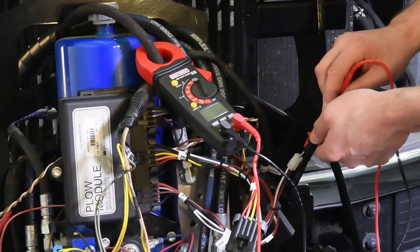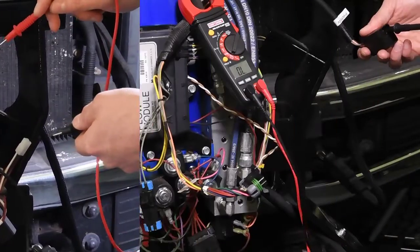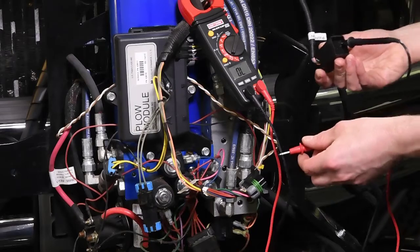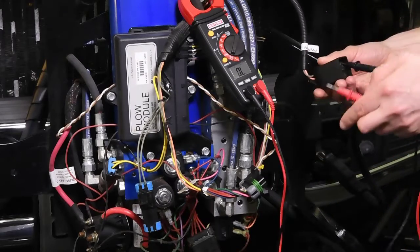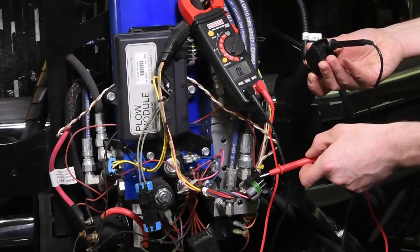Another way to test for an open on the orange wire is to insert a probe into the upper right socket ensuring that the gray wire is on top. Then place a probe into pin J on the plug that goes into port B on the plow module.